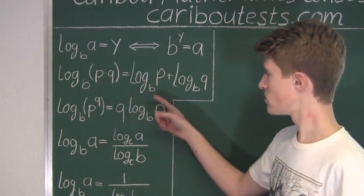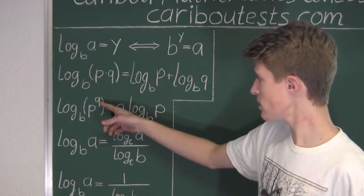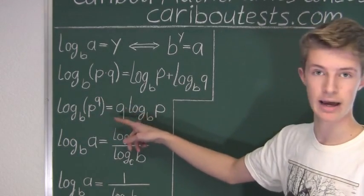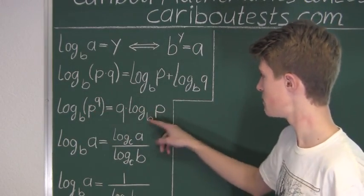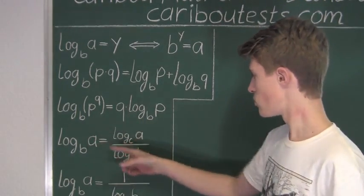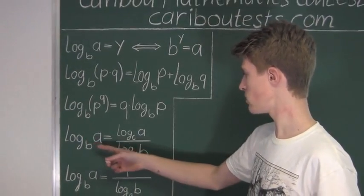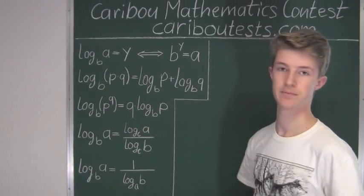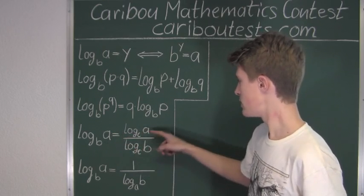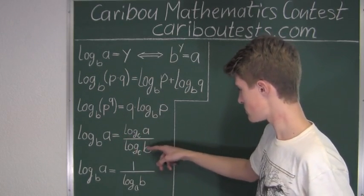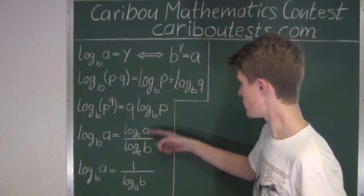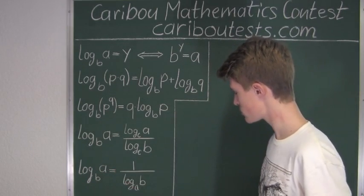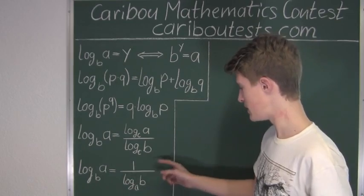The next rule shows how to rewrite a logarithm of a power by moving the exponent — here q — to the front and multiplying that by the logarithm, keeping p and base B. The next rule shows how to rewrite a logarithm with a different base: base B becomes a quotient with base C. If we swap A and B, we get the inverse of that quotient. So logarithm A base B equals 1 over logarithm B base A.